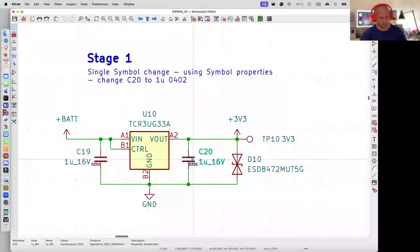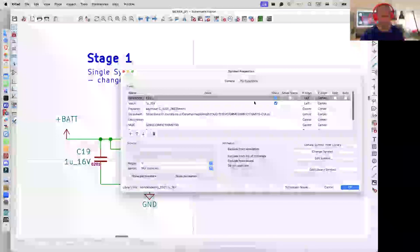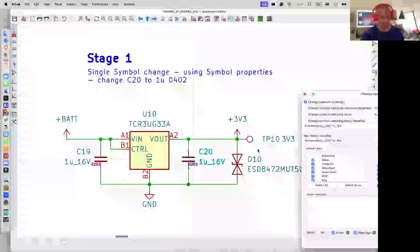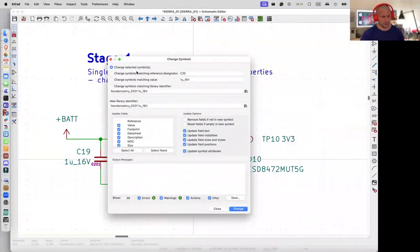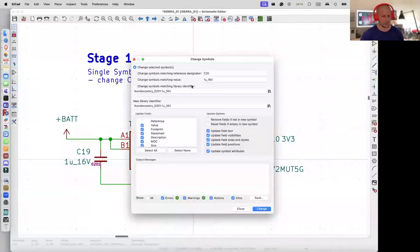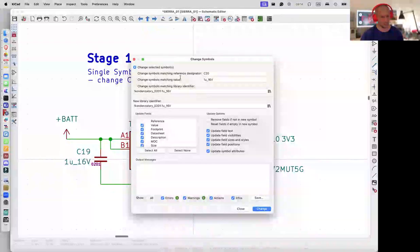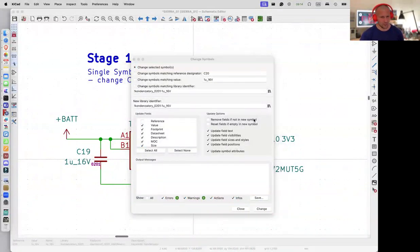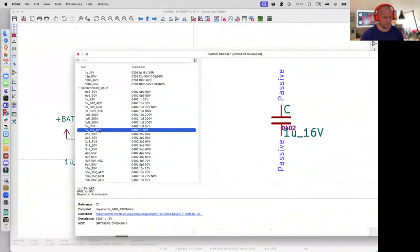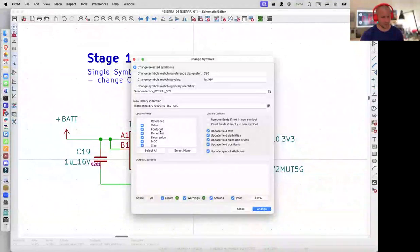Open the symbol properties by E key. There is a symbol property window and the button change symbol. You can leave the changed symbols checked or you can change the settings, but we want to change only C20. Keep the changed symbols as is. Now I am looking for another symbol. Here it is.